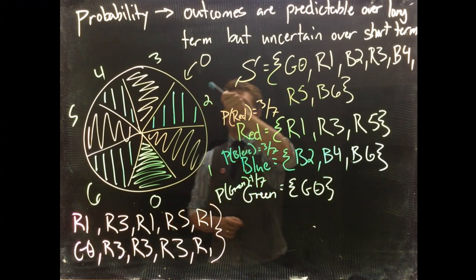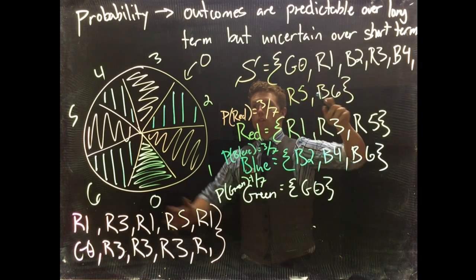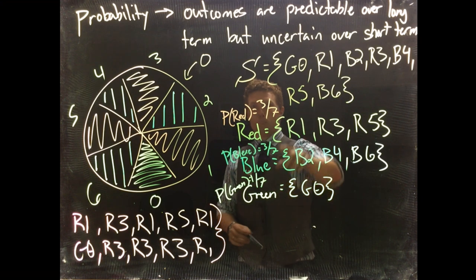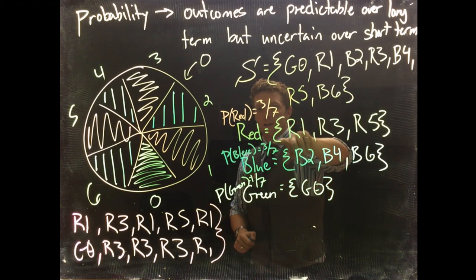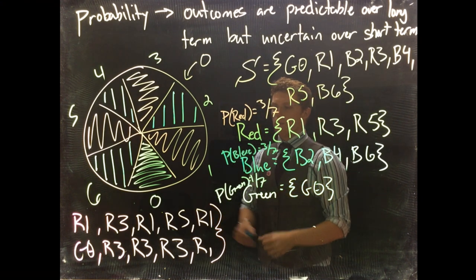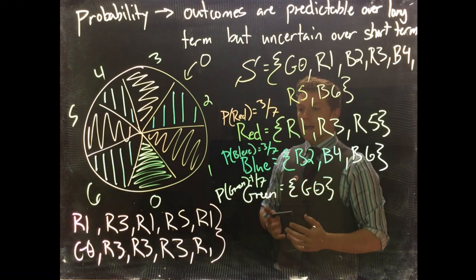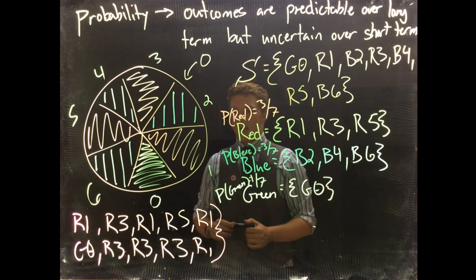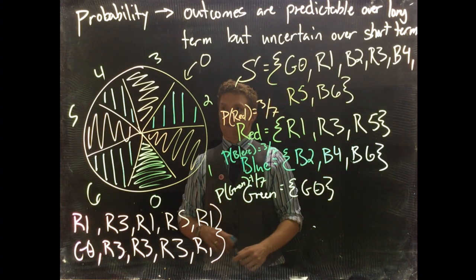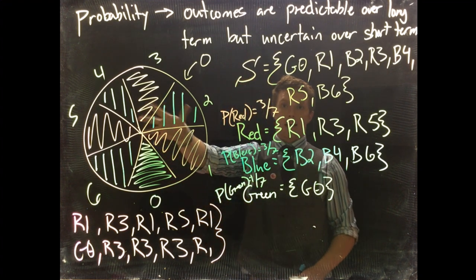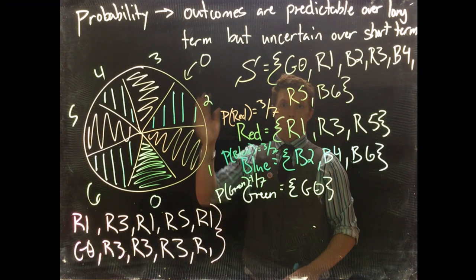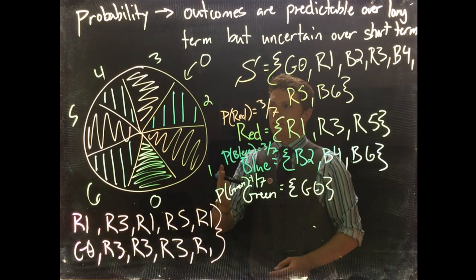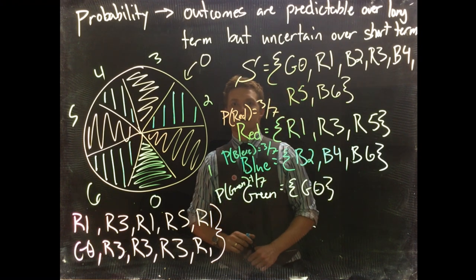But this is really important to know that probabilities are predictable over the long run. If we spin this roulette table a million times, it's going to basically be three-sevenths red, three-sevenths blue, one-seventh green. But over short runs, it's uncertain exactly what's going to happen. Randomness and chance are true things that happen. And in the gambler's fallacy, we have to remember that if events, in fact, are independent from one another, one roulette spin to the next, that all of this history does not affect what is going to happen next.